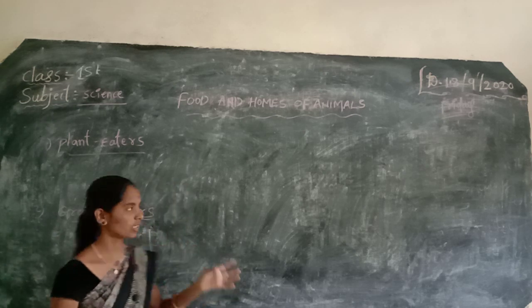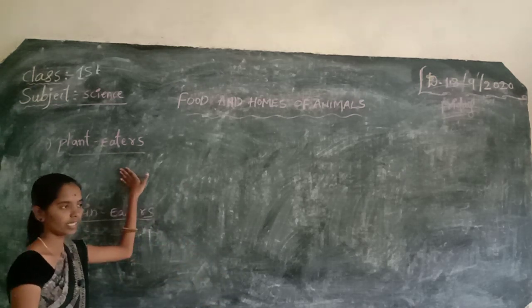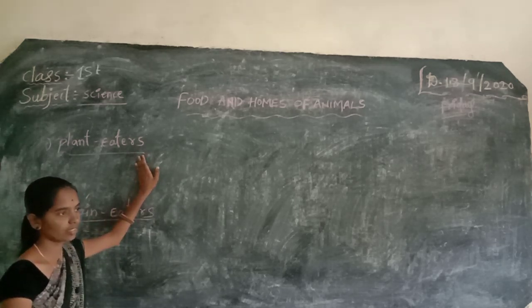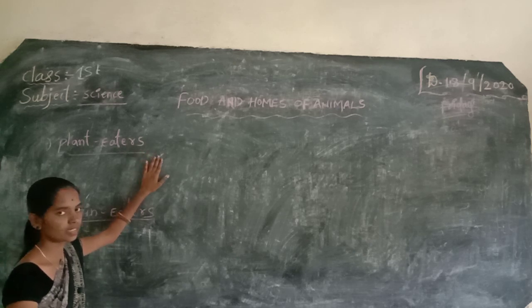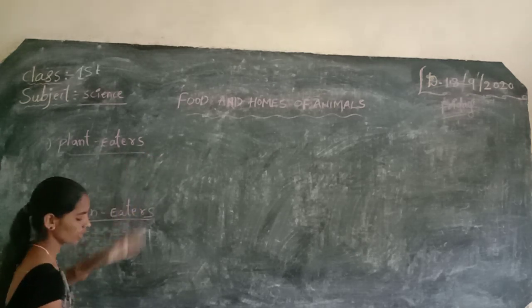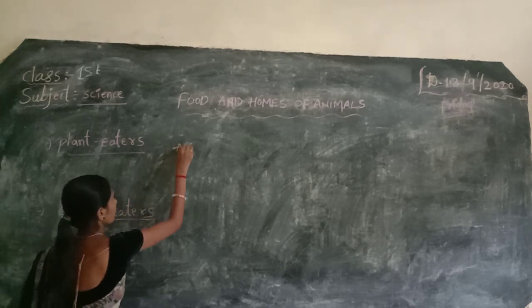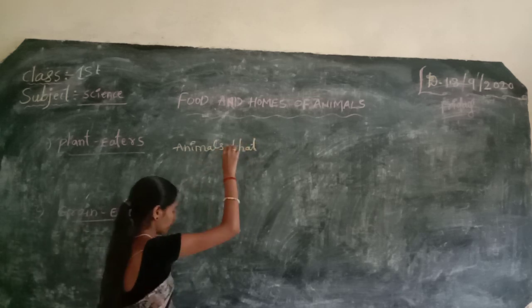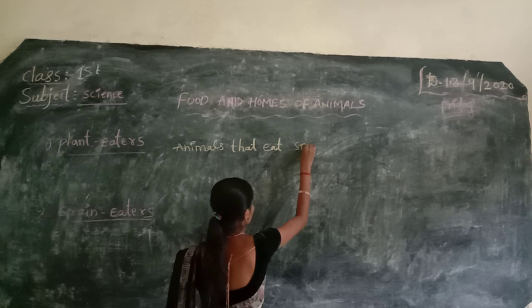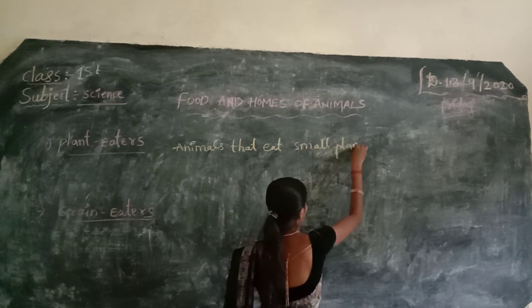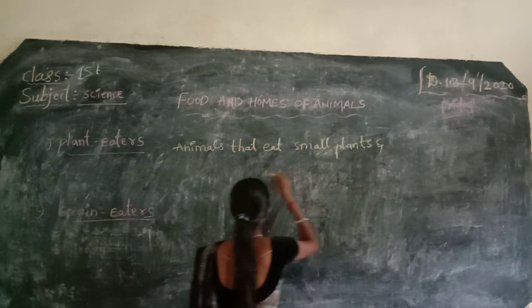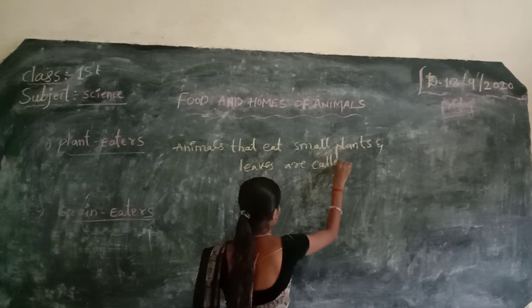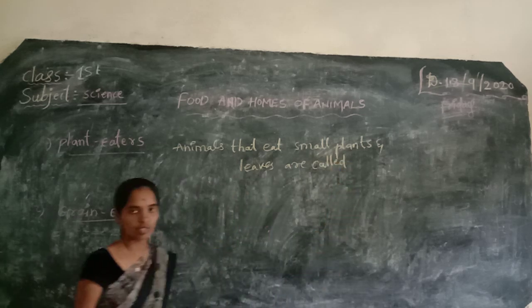First of all, we discuss about plant eaters. Animals that eat small plants, leaves and grass are called plant eaters.